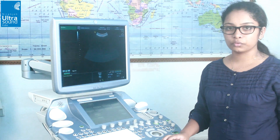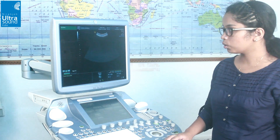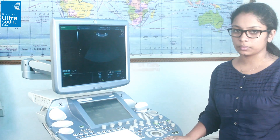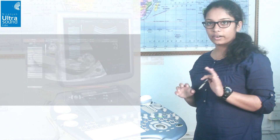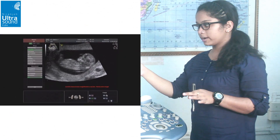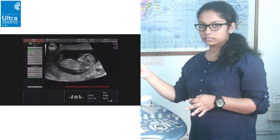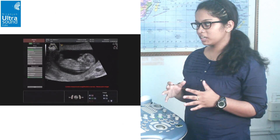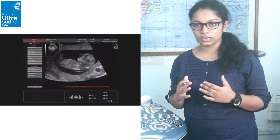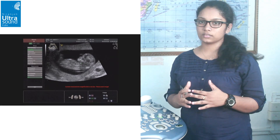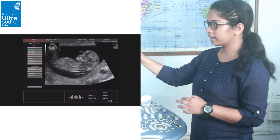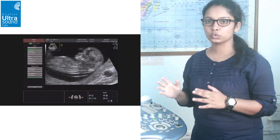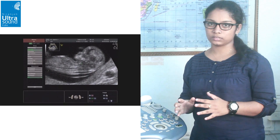Now we have a choice of doing manual or Sono NT measurement. A red warning is displayed on the screen indicating that the image magnification is insufficient, so we enlarge the image and first do manual measurement.